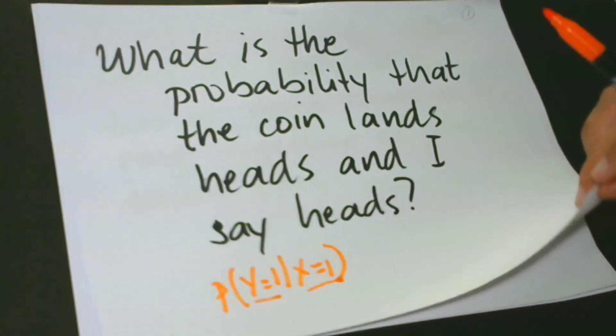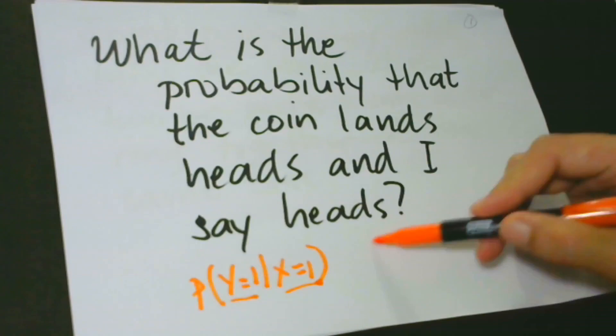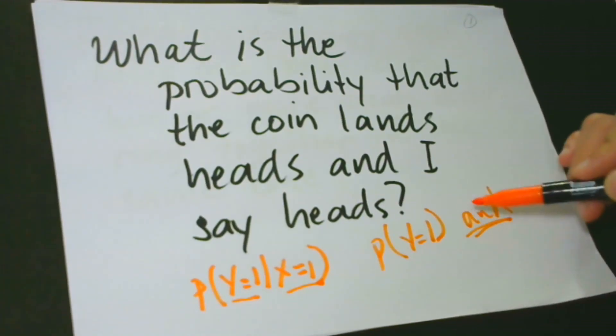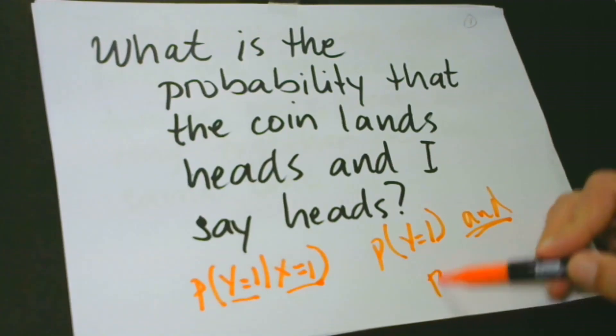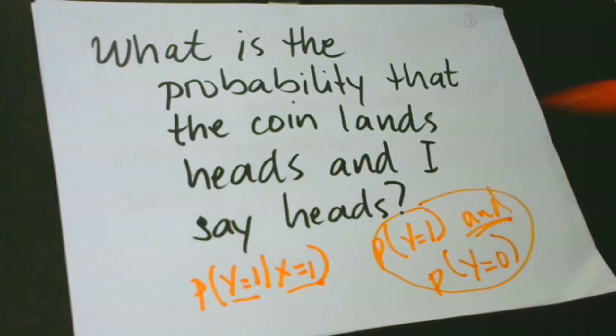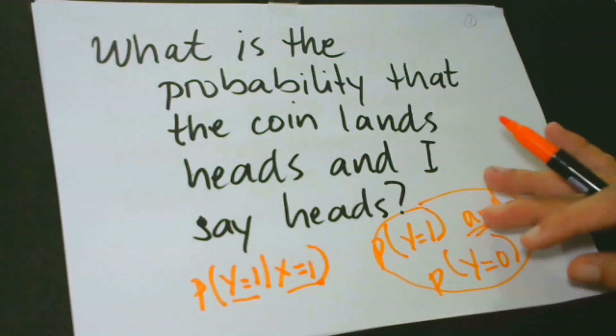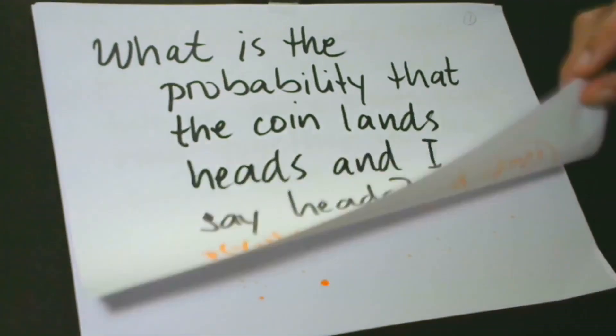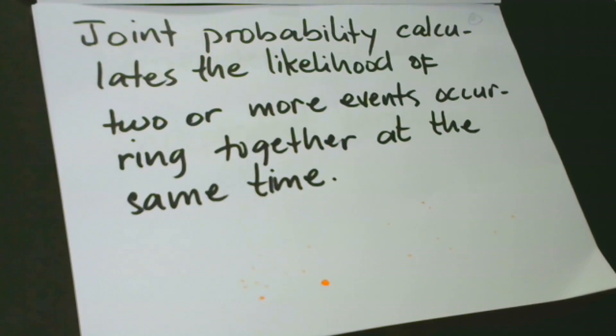What we want to know this time is like this. You would like to evaluate P, Y equals to 1, and P, Y equals 0. This one calls for understanding joint probabilities. To put things in proper perspective, we might want to know the probability that a coin shows heads and I say heads, or the probability that a coin shows heads and I say tail.